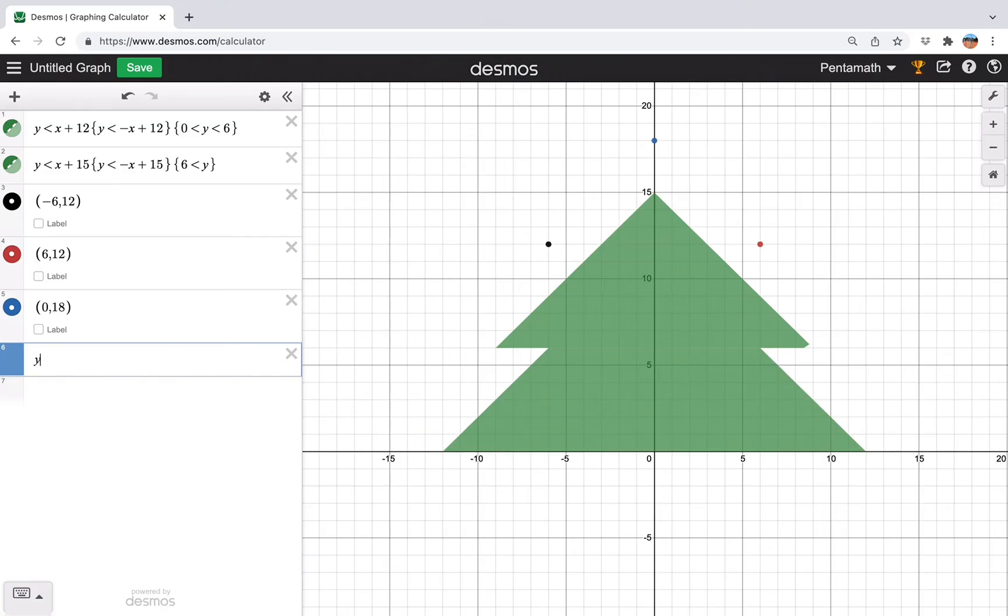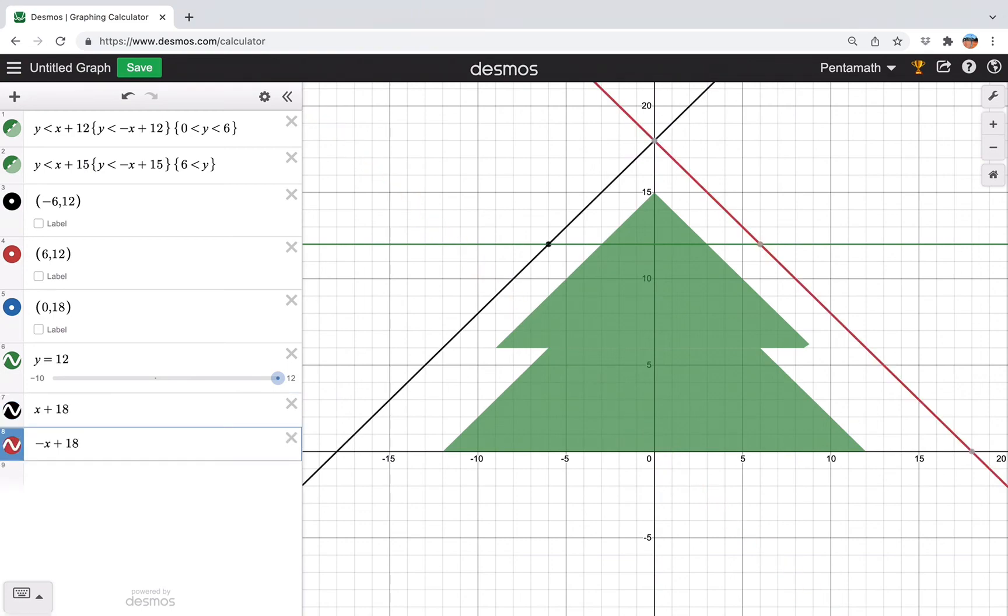No, no, no, we're just doing lines now. So there's y equals 12. Then y equals x plus 18. Then y equals negative x plus 18 to get those three lines.